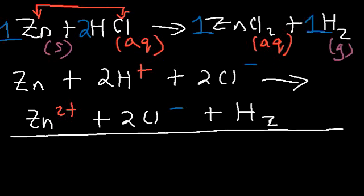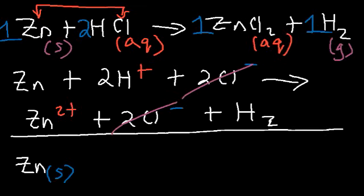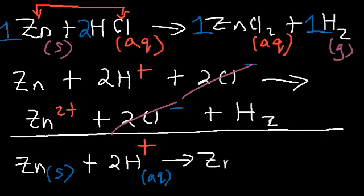On the right side in zinc chloride we have the Zn2+ ion and two chloride ions, plus hydrogen gas. The spectator ions are the chloride ions — they appear exactly the same on both sides. So the net ionic equation is: solid zinc plus two H+ ions (aqueous) produces the zinc 2+ ion (aqueous) and hydrogen gas.